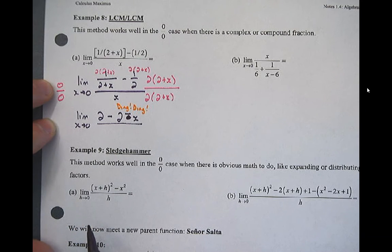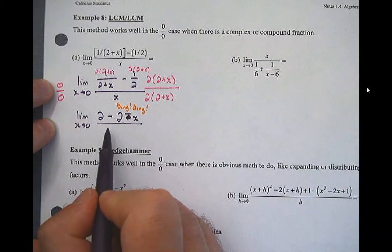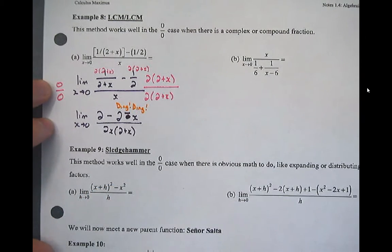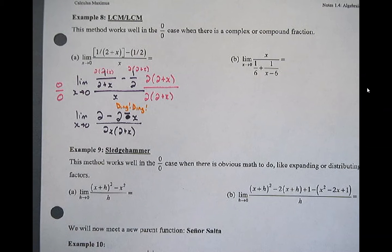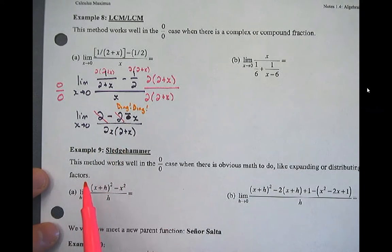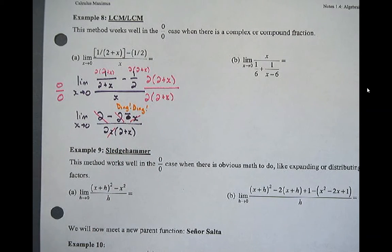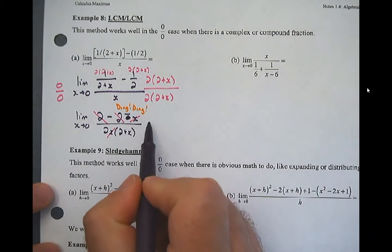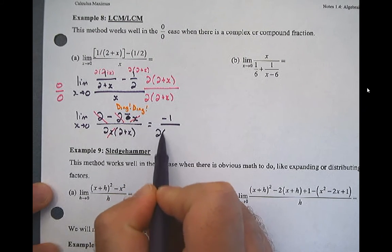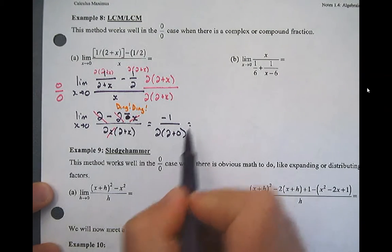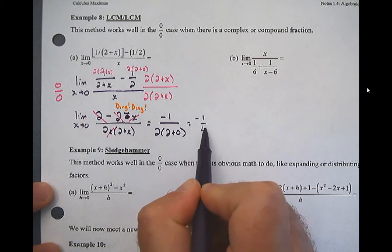Two minus two is gone. This is a negative x, which cancels with the x. Now we're left with negative one over two times (two plus zero). I can direct substitute: two plus zero is two, two times two is four, and I get negative one-fourth.